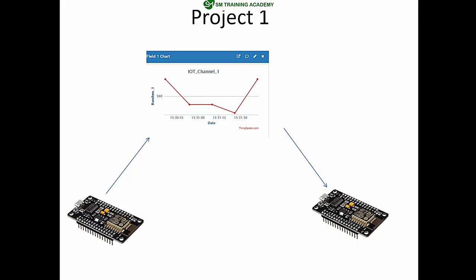Let me explain the project I'm going to build — you can also build the same project until you achieve the same output that I got in my hardware. The concept is simple: I will have two Node MCUs. The one on the left is the transmitter Node MCU and the one on the right is the receiver Node MCU, and I will be connecting both of these Node MCUs to the router available in my home for internet access.